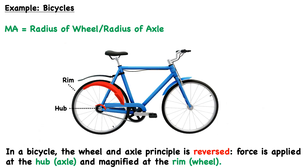Aside from a fishing rod, another common example of a wheel and axle system in everyday life is a bicycle. But there's a catch — in a bicycle, the wheel and axle principle is reversed. Unlike the traditional setup where force is applied to the wheel to amplify the torque at the axle, the force is instead applied to the hub, which is the axle, via the chain and cassette.